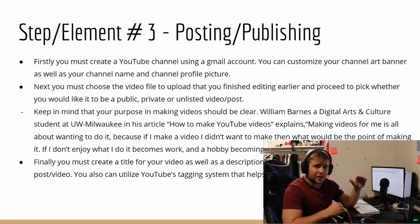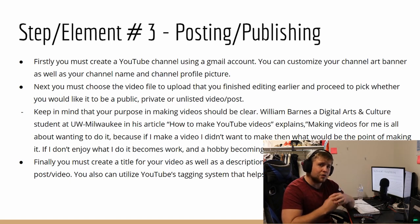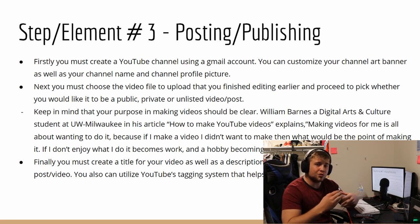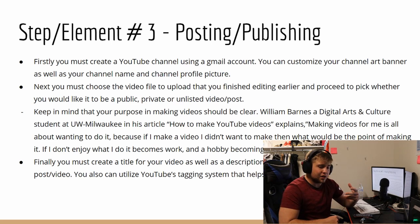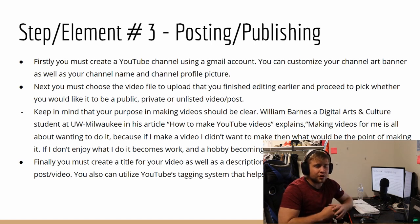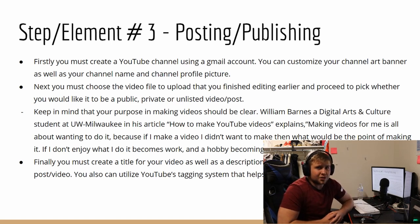One tip I do is I add at the bottom of the description everything I use equipment-wise to make the video, as well as what editing software I use. That way people watch and wonder how I made it — then they know what things I use to compose it. Once you publish it, you can make it private, unlisted, or public. Public means everybody can see it, unlisted means only people with the link can see it, and private is just for you if you're not ready to release it yet. Tags are also very important, though that gets more into the algorithm, which isn't what this video is about.